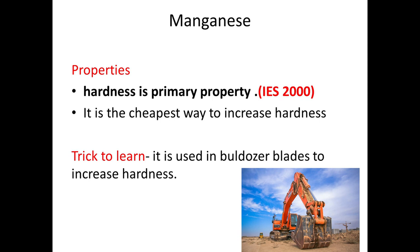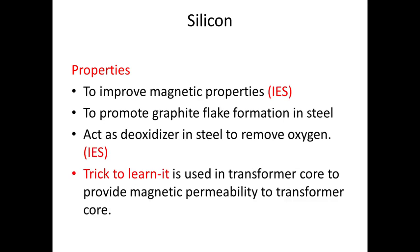Next is manganese. Manganese provides hardness and it is the cheapest way to provide hardness to steel. For example, it is used in bulldozer blades, which are very hard. These bulldozer blades are made of manganese steel, which gives them hardness.